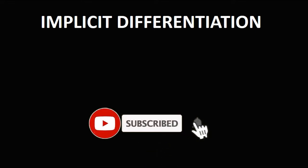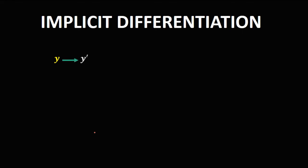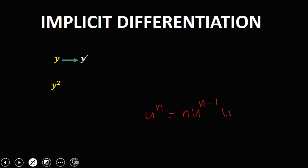Let's discuss implicit differentiation. First, the derivative of y is y prime. For the derivative of y squared, we use the general power rule: if we have u to the power n, the derivative is n times u to the power n minus 1 times the derivative of u. So the derivative of y squared is 2 times y to the power 1 times y prime, which gives us 2y·y prime.